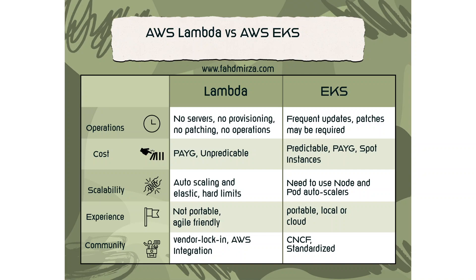Earlier, AWS Lambda was mainly for event-driven programming and EKS was for container orchestration. But things are evolving rapidly and both Lambda and EKS are offering much more. For example, with the help of Crossplane, you can now use EKS as infrastructure as code, just like Terraform. You can provision AWS resources from within a Kubernetes or EKS cluster by using Crossplane. In this video, we are only going to see how to select between Elastic Kubernetes Service (EKS) and Lambda for your application deployment.